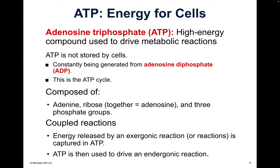Star this slide: ATP, adenosine triphosphate, is energy for cells — a high energy compound used to drive metabolic reactions. ATP is not stored by the cells; they use it and get rid of it. It's constantly being generated from ADP, adenosine diphosphate. The 'di' means two phosphates, and 'tri' means three phosphates. ADP produces ATP — it's a cycle.